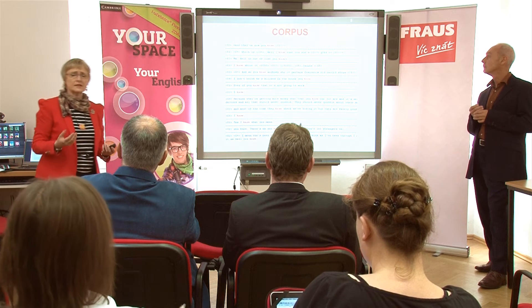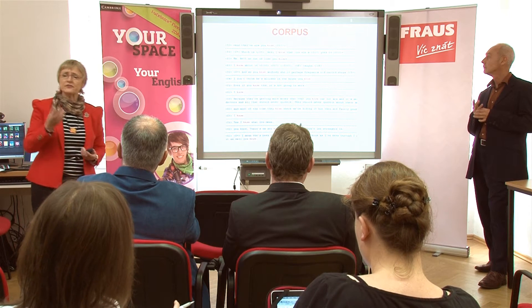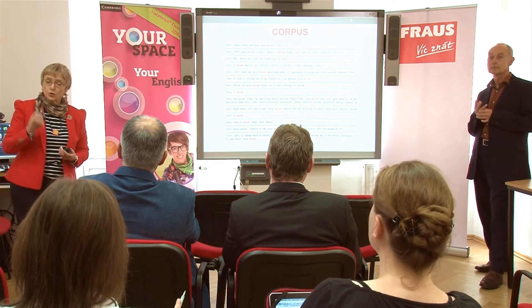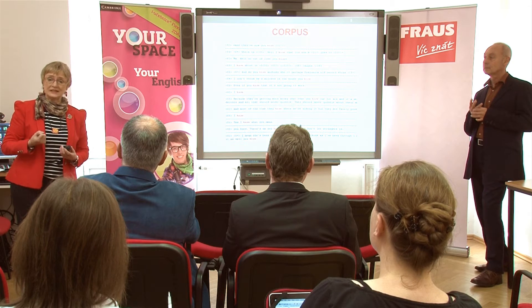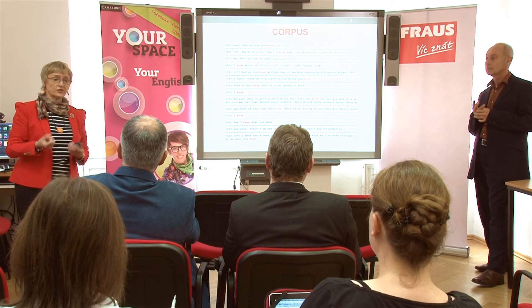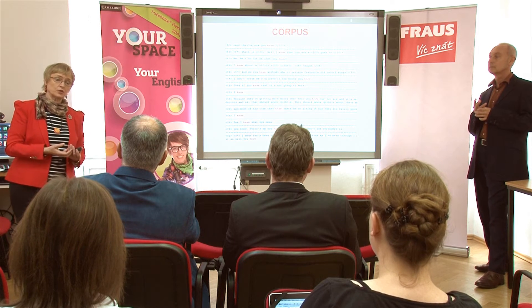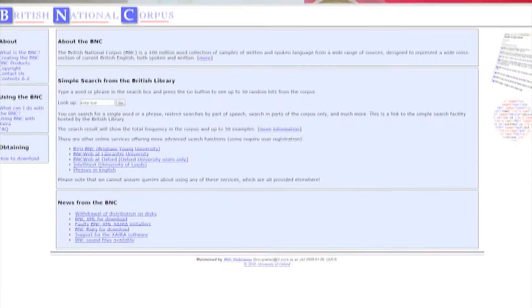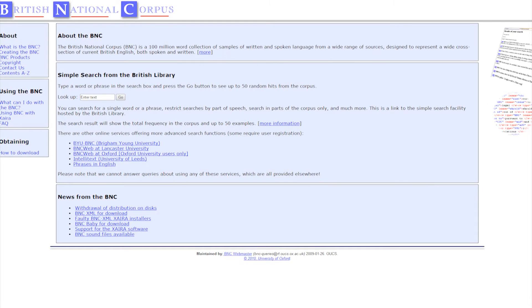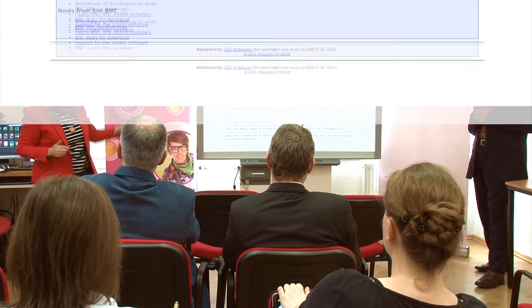Here I've just given you a simple example where you can find any corpus on the internet. Not Cambridge, because Cambridge is a private corpus which is used by the publishing house. But you can find the British National Corpus, BNC. And if you look for that, you can actually also play with the corpus yourself. So do have a look and just play around.